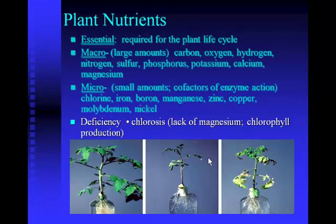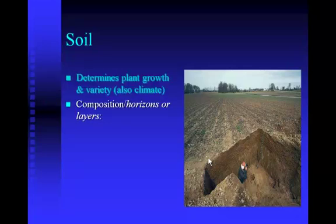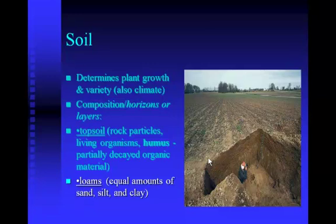The quality of the soil is also important to a plant. Soil is divided into different horizons or layers. Topsoil is basically a balance of living organisms like bacteria, nitrogen-fixing bacteria, earthworms, humus — which is partially decayed organic material — and rock particles for drainage. Loams are generally the best soils for most plants and contain an equal amount of sand, silt, and clay. Clay tends to hold water; sand tends to let water drain — you want a balance so the soil holds just enough water, but not too much or too little.